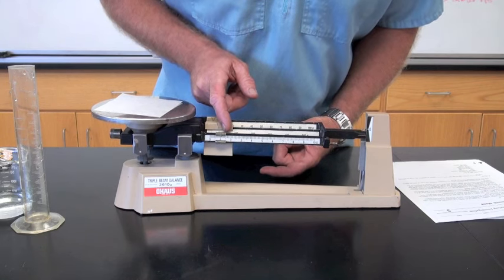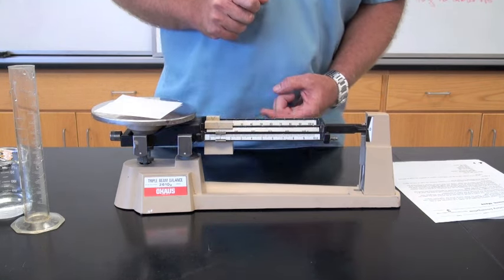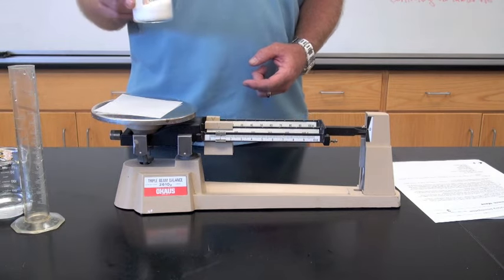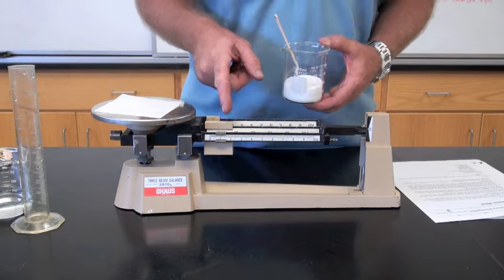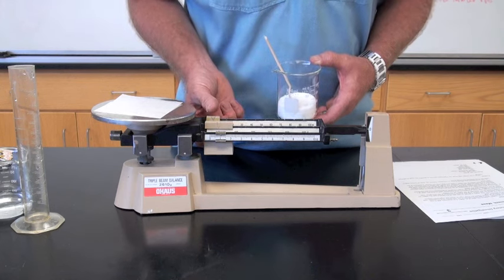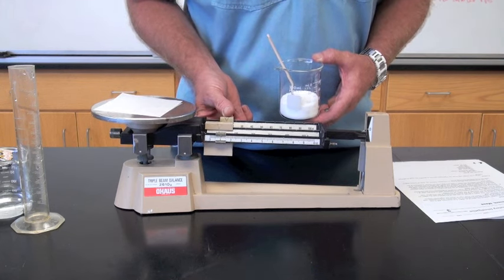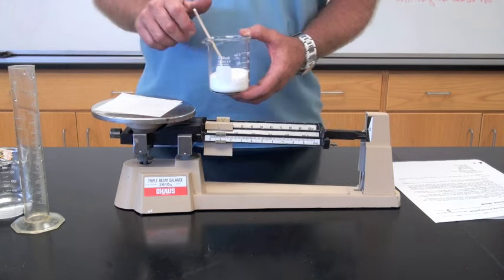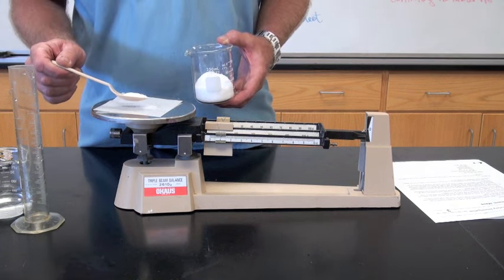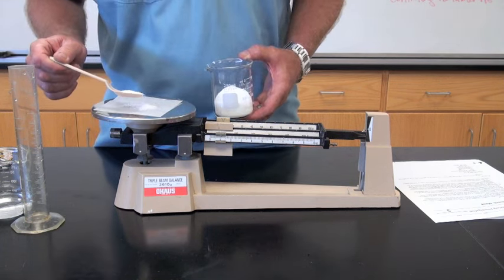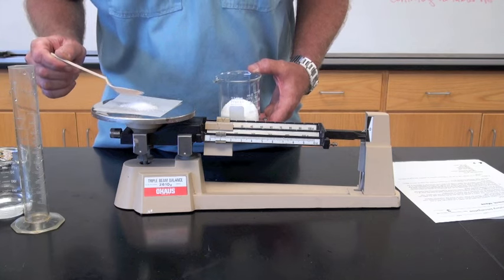Once you have the mass of your paper zeroed out, then you can start adding your substance. If you need 10 grams of your chemical, then you'll add 10 grams to the mass of your paper. So I add my 10 grams by sliding my 10 rider over. Add my chemical slowly until my zero marker equals its zero.